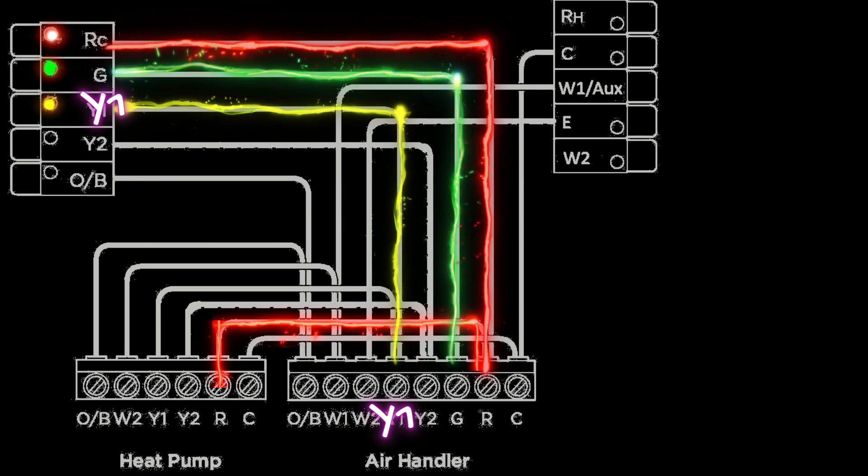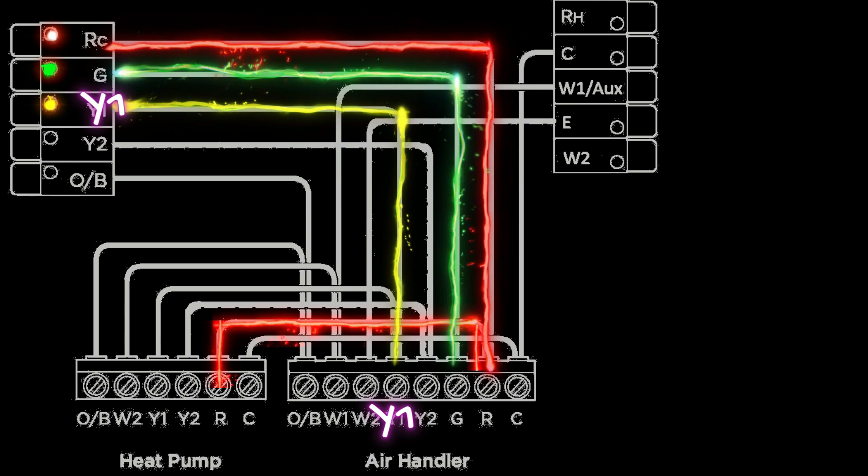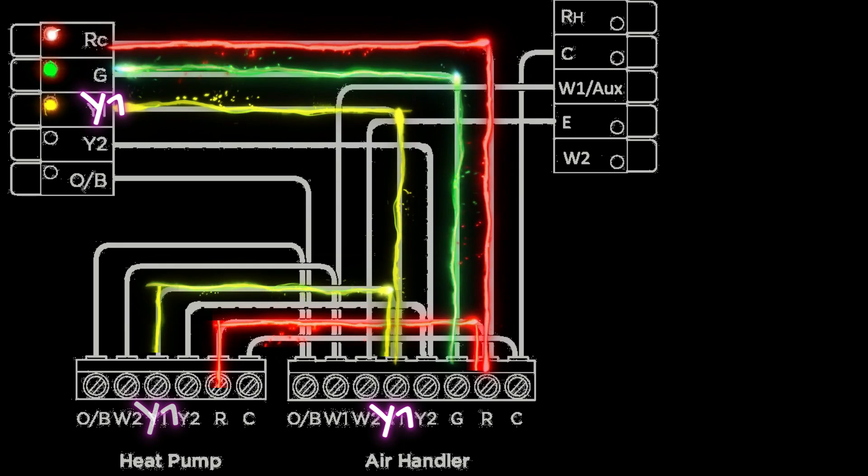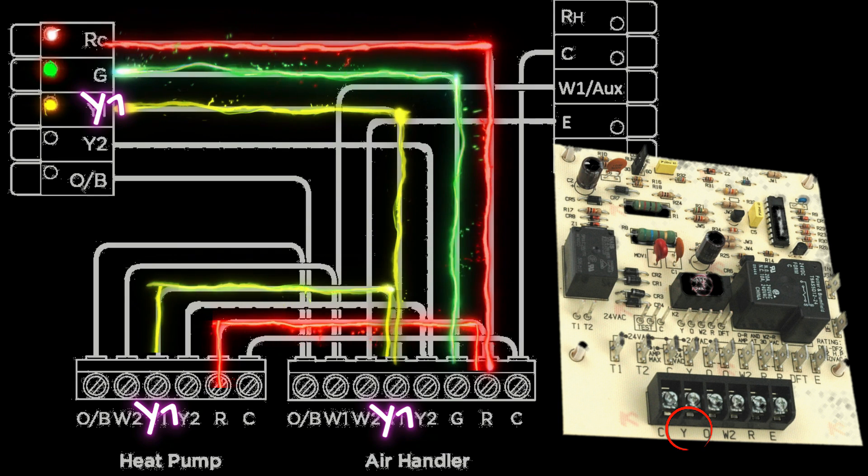Now once our Y1 signal hits that terminal on the control board in the air handler, you're going to have another yellow wire coming off of that same terminal and that is going to go out to the defrost control board on the condensing unit outside.